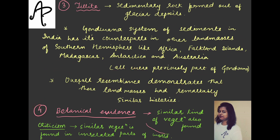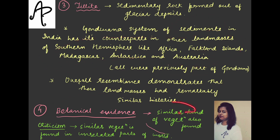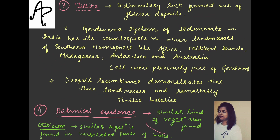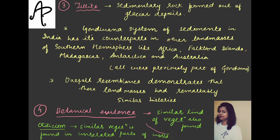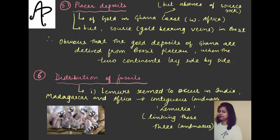The next evidence is botanical evidence — about plants and vegetation. Just as the sediments were found in all of these landmasses along with India, similarly the same kind of vegetation was also found in these landmasses along with India. The criticism for this point is that similar vegetation is found in unrelated parts of the world also. So there were certain other unrelated parts where similar vegetation was found, raising the question of whether those were also combined — of course not. Similar sediments and vegetation found in the Gondwana land system remains as evidence.